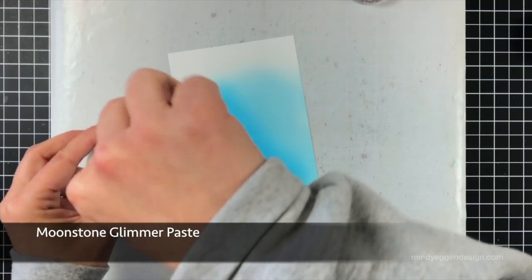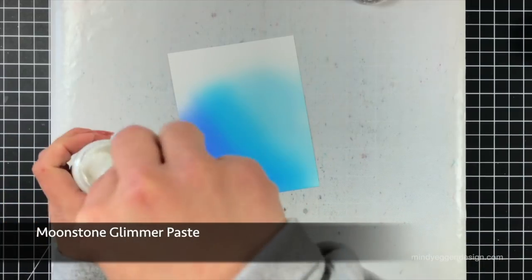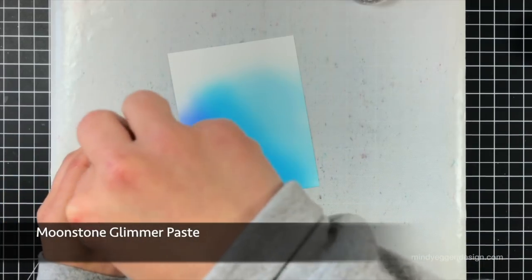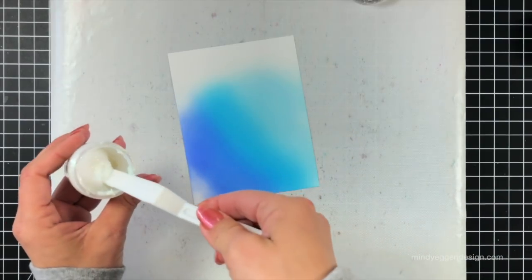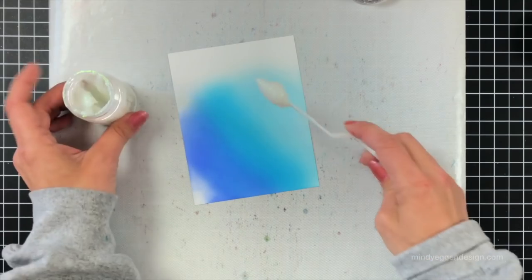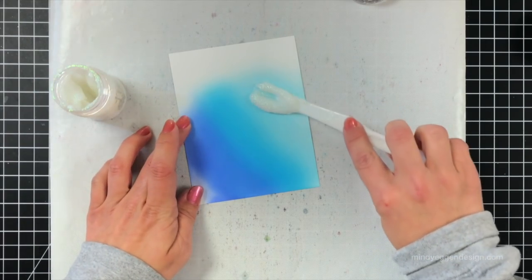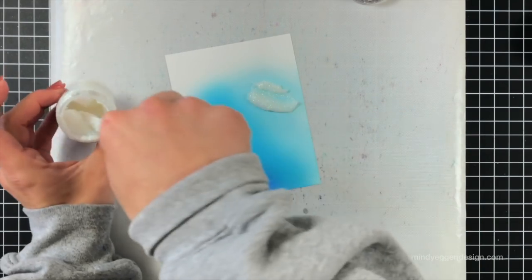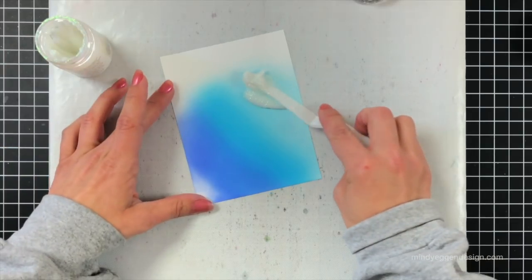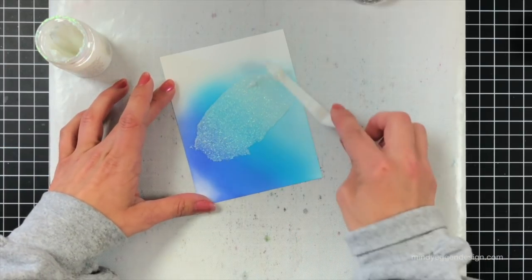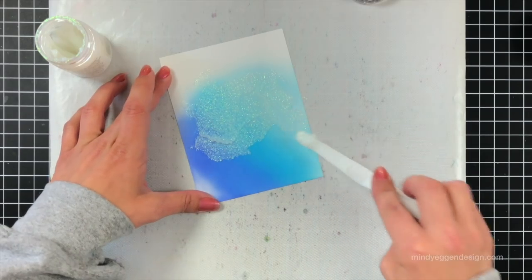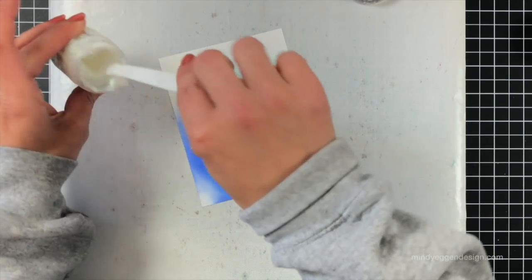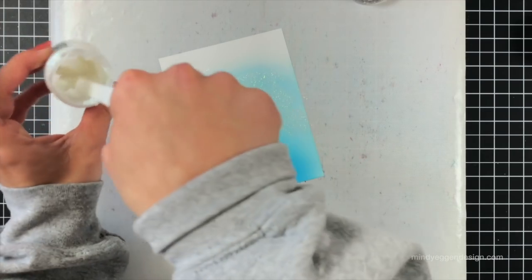Next I'm using the Moonstone Glimmer Paste. And this is just some really gorgeous sparkle I'm going to add to that background. We're still going to see those colors shine through but it's just going to add a ton of sparkle. So I'm going to scoop some out of my jar and just kind of smush it down onto my cardstock there. And then I'll just smooth that over the entire background. I want to make sure I'm having a nice coverage everywhere so that when I trim it down everything will have that Glimmer Paste on it.